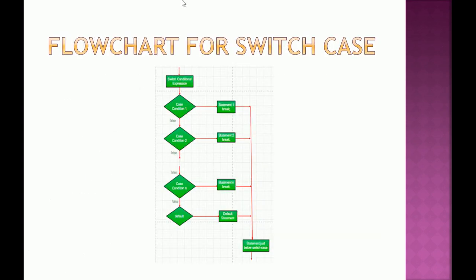This is the flowchart of switch case. It sends control to the particular case as per the switch condition. Suppose it is case value 2, it will directly go to case value 2 and execute. Suppose the case value is 3, it will send control to case value 3. If that case is true it executes; if false it moves on to the next part.